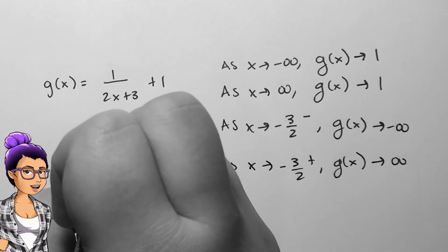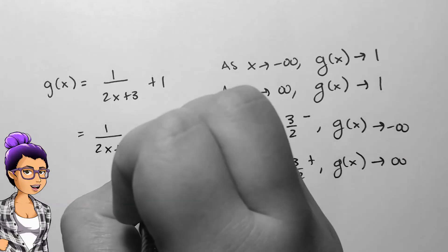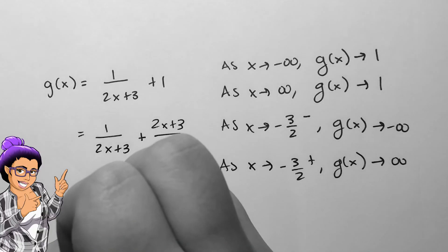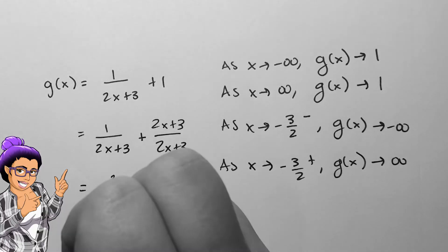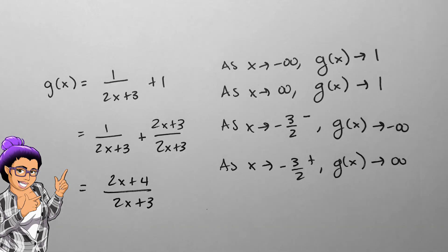For the rest of the lesson, we won't look at rational functions that are in this format, as they'd be condensed to one fraction instead. So this function is also equal to 2x plus 4 divided by 2x plus 3.